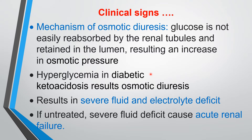There is hyperglycemia in diabetic ketoacidosis, and that results in osmotic diuresis, leading to severe fluid and electrolyte deficit. The cases become slowly serious and worsen. If the animal is left untreated, it causes a severe fluid deficit and may cause acute renal failure.